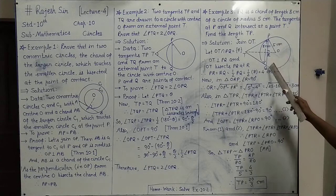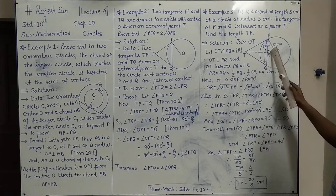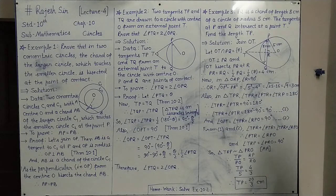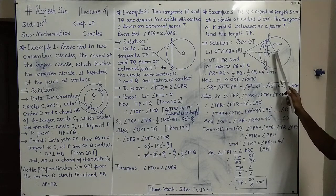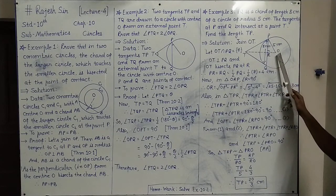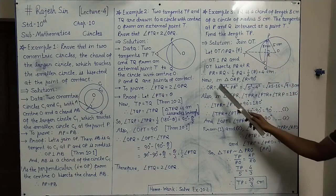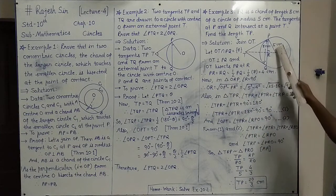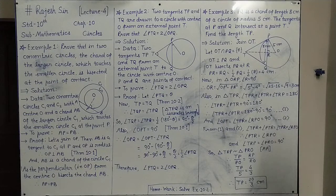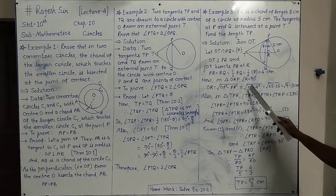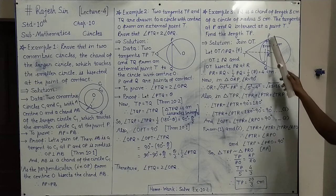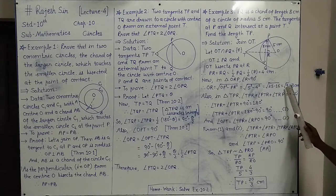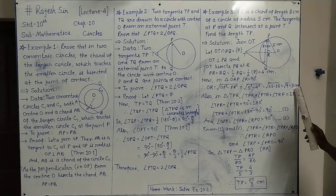In triangle ORP, angle R is 90°. Using the Pythagorean theorem: OR² equals OP² minus PR². So OR equals root of (5² minus 4²) equals root of (25 minus 16) equals root of 9 equals 3 cm.